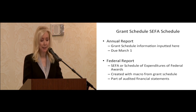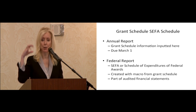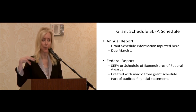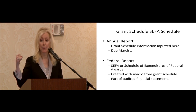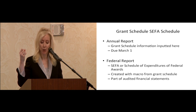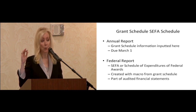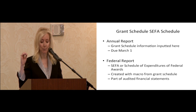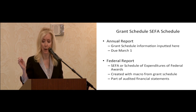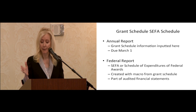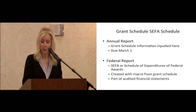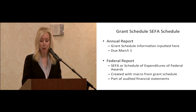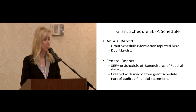Another change from this last annual report is the question — you remember there's a series of questions asked when you start doing the annual report. One of the questions was, in regard to grants, did your unit disperse more than $400,000 from grants? And if you said yes, then you had to populate the grant schedule. For this next annual report, the question will ask: did you disperse money from grants? Period — it does not have a dollar limit now.